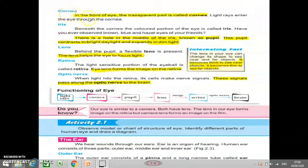First part of eye is cornea. In the front of eye, the transparent part is called cornea. The first part is called cornea, transparent means it has no color, it is clear. Light rays enter the eye through the cornea. Light rays enter the eye through the cornea.